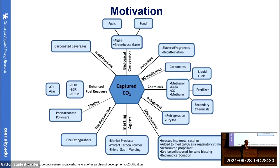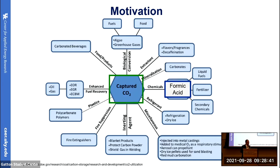Naturally and artificially, carbon dioxide is captured and converted to different products. It is a starting material for the synthesis of different types of chemicals, like methanol, urea, carbon monoxide, methane, and so on. And we are targeting to produce formic acid.